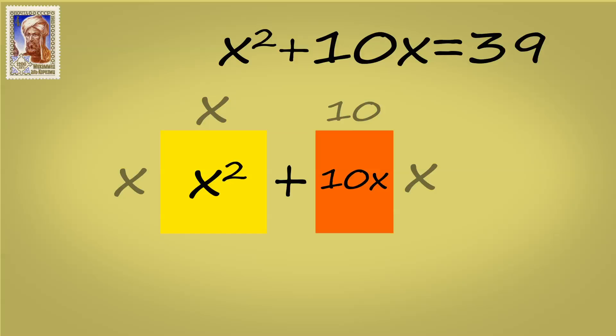And so he was trying to figure out how these two boxes or these two squares could actually make another square. So what he did was he took the box that was 10x and he cut it in half. So now he's got two rectangles that are 5x each. And he placed these on the edges of the x squared box.